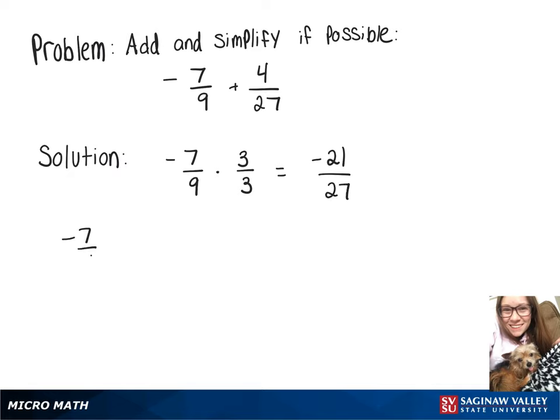So we can rewrite our original problem as negative 21 over 27 plus 4 over 27.